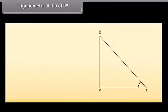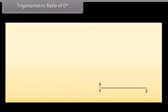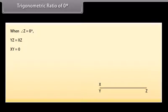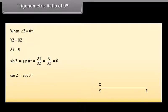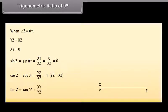Trigonometric ratio of 0 degrees: Consider a right-angled triangle XYZ. Reduce the measure of angle Z slowly — XZ rotates left and becomes flatter. When angle Z is reduced to 0°, XZ merges with YZ and the length of XY becomes 0. Therefore: sin 0° = XY/XZ = 0/XZ = 0, cos 0° = YZ/XZ = 1 (since YZ = XZ), and tan 0° = XY/YZ = 0/YZ = 0.